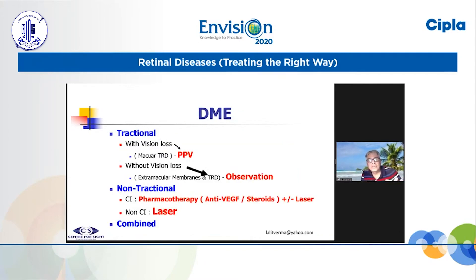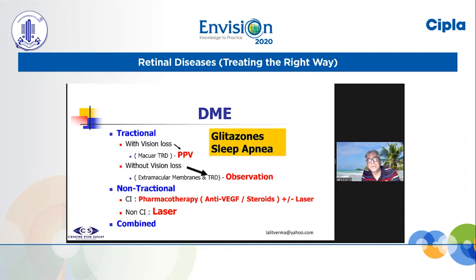In summary: traction with vision loss — PPV. Without vision loss — observation. Non-tractional — pharmacotherapy, with laser sometimes, and sometimes combined treatment.